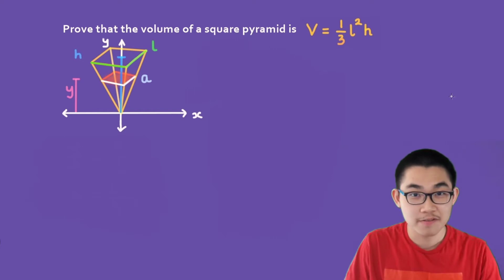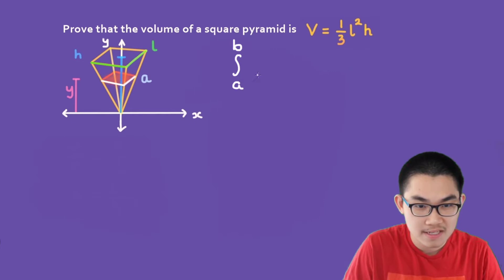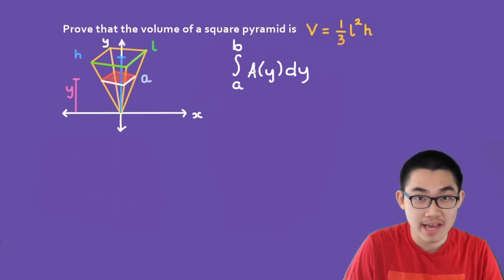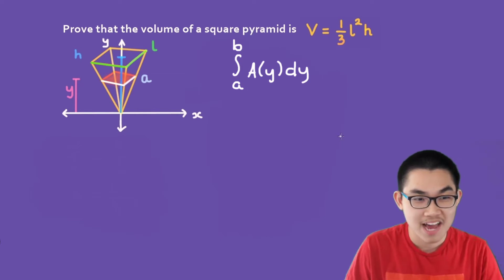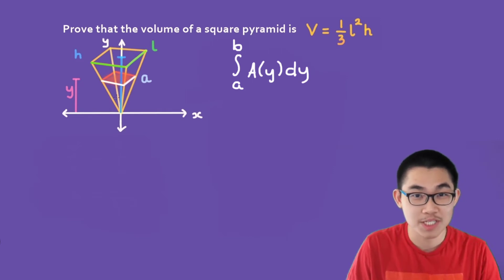The volume of any shape is the same as the integral from A to B of A(Y) dY, where A(Y) is the area of the cross-section, which is the square. You might be wondering why we're integrating with respect to Y. The trick is, the cross-section lies on the Y axis, so it is easier to integrate with respect to Y.